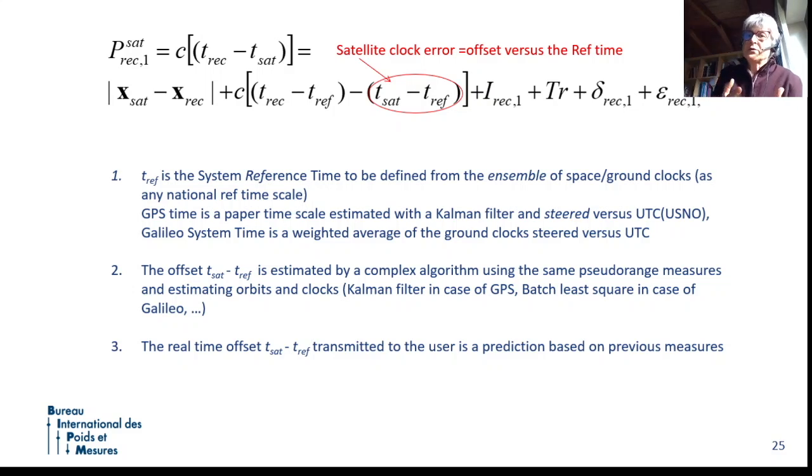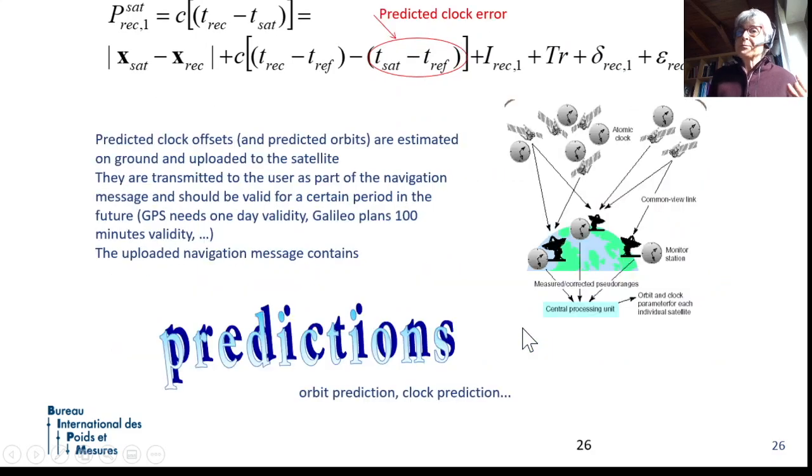Growing with a certain law, so they can predict what will happen in the next hours. And so, when you are a user and you receive the message from the satellite, you receive what the satellite is predicting to have as clock offset based on the information that was estimated on ground some hours ago, and then uploaded to the satellite when the satellite was in view of the uploading station. So, prediction is something which is, again, quite important for signal processing and timekeeping. GPS started with prediction valid one day. Galileo, for example, plans 100-minute validity for the prediction. And also, the orbit is predicted. Everything the satellite tells you is based on previous measurements carried out and processed on ground and uploaded to the satellite.